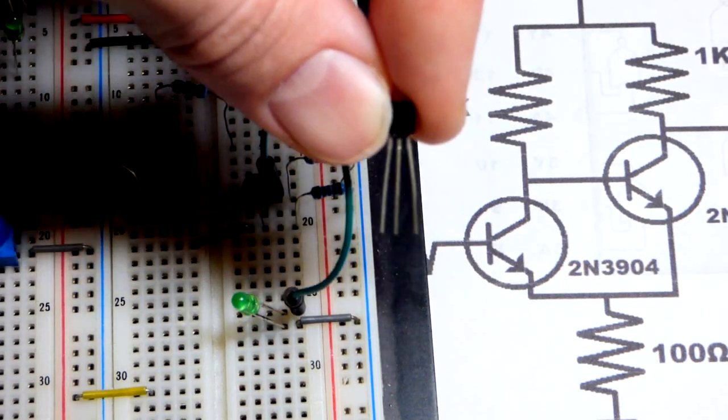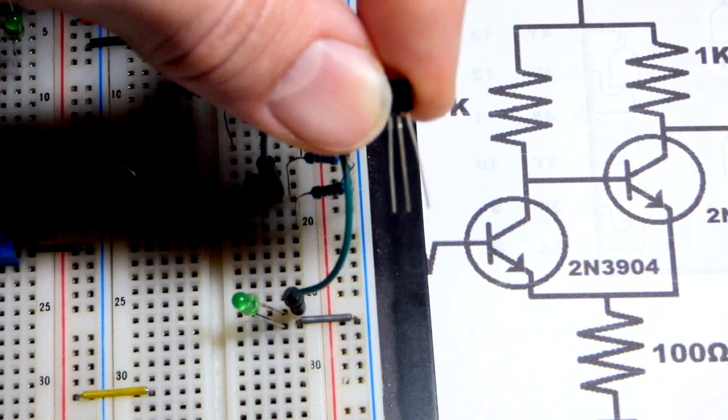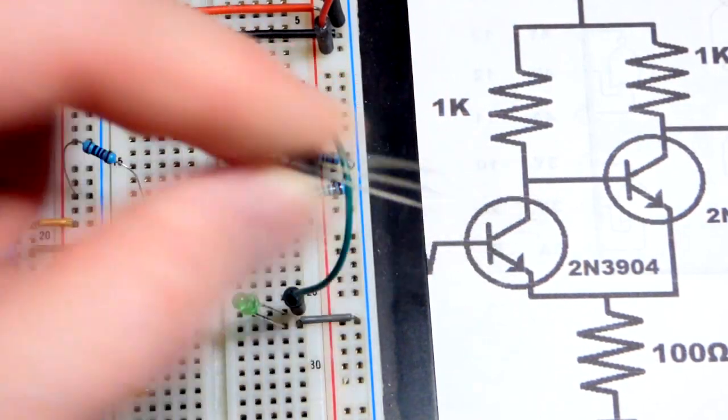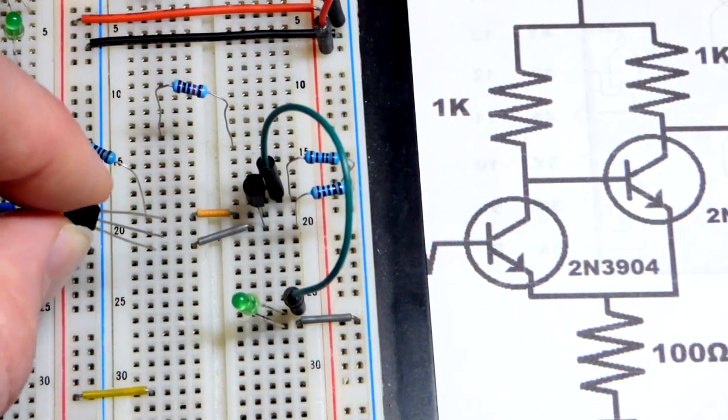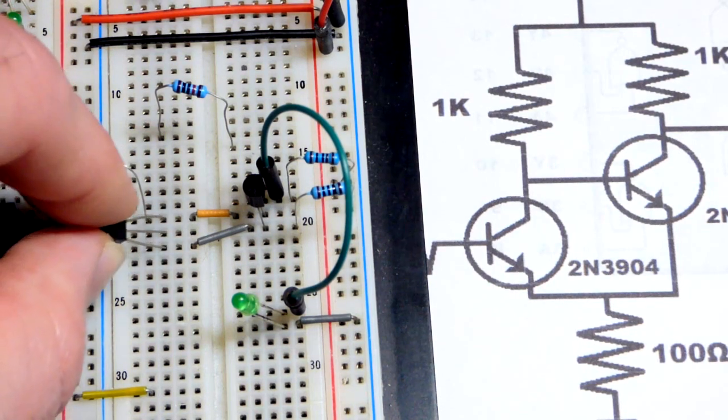We're going to grab this again. The emitter to the left, base to the middle, collector to the right. We turn it that way and we have the same pin layout.